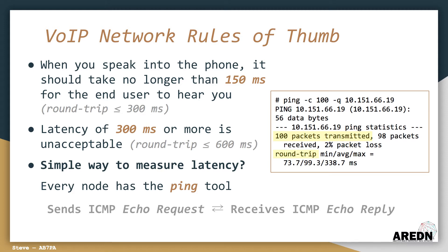As a general rule, when you speak into the phone, it should take no longer than 150 milliseconds for the end user to hear you. A latency greater than 300 milliseconds makes VoIP basically unusable, so our goal should be to have an average one-way latency under 150 milliseconds. Every Arden node has the ping tool for measuring network latency. This is a command line tool, so you'll need to log into your node using Telnet or SSH. Ping works by sending an Internet Control Message Protocol packet called an echo request, and then it receives an echo reply, which means that ping will display the round trip latency rather than the one-way latency.